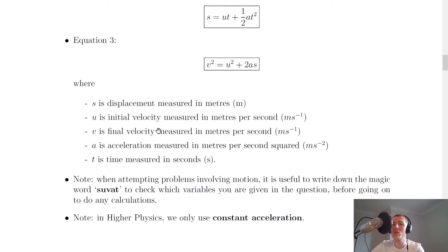V is final velocity measured in meters per second ms to the minus 1. And a is acceleration measured in meters per second squared or meters per second per second and that's ms to the minus 2. And then t is time measured in seconds.